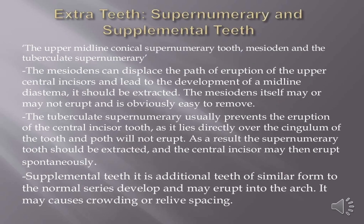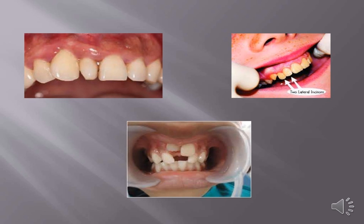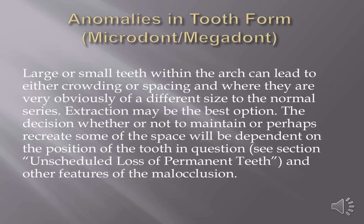Regarding supernumerary teeth: the upper midline conical supernumerary tooth, the mesiodens, can displace the path of eruption of the upper central incisors and should be extracted. The mesiodens itself may or may not erupt and is easier to remove when it does. The tuberculate supernumerary usually prevents eruption of the central incisor tooth, as it lies directly over the cingulum of the tooth. As a result, the supernumerary tooth should be extracted, and the central incisor may then erupt spontaneously. Supplemental teeth are additional teeth of similar form to the normal series that may develop and erupt into the arch, potentially causing crowding or relieving spacing. Large or small teeth within the arch can lead to either crowding or spacing when they are obviously of a different size to the normal series.